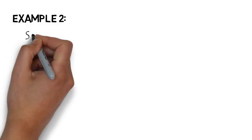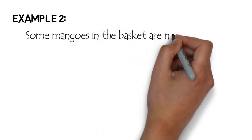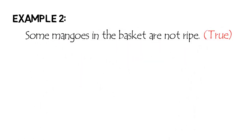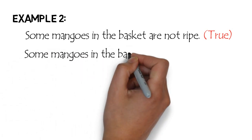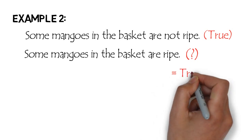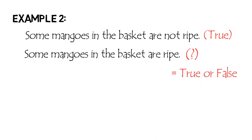However, if we assume that the proposition 'Some mangoes in the basket are not ripe' is true, then its subcontrary, 'Some mangoes in the basket are ripe,' is doubtful or cannot be absolutely determined. In other words, it can be true or it can be false.